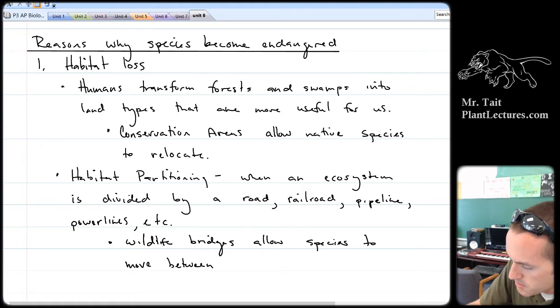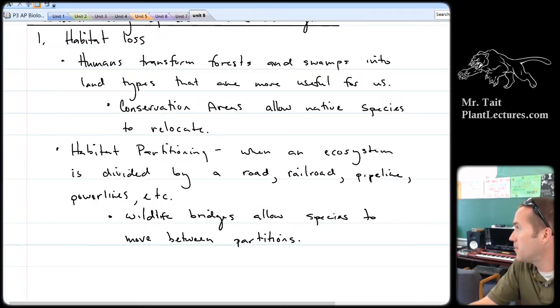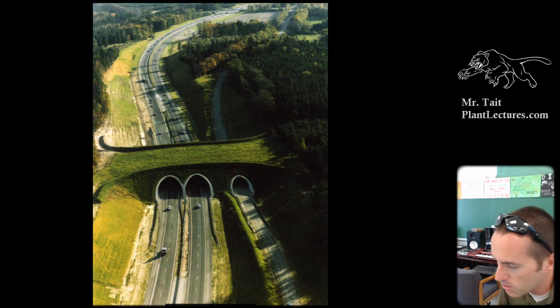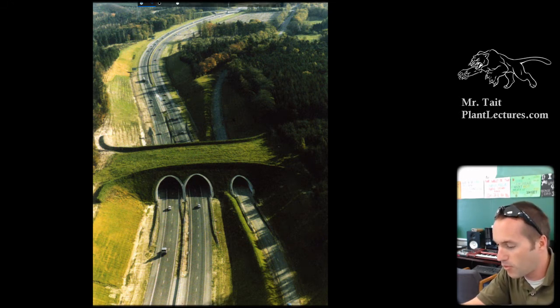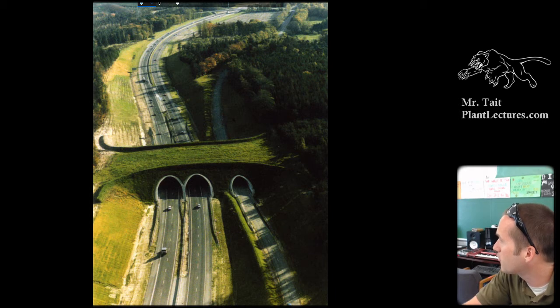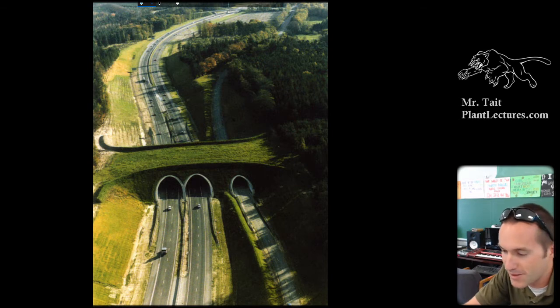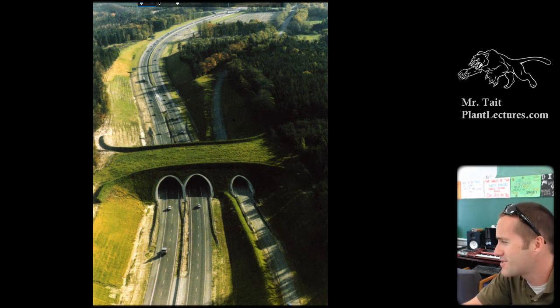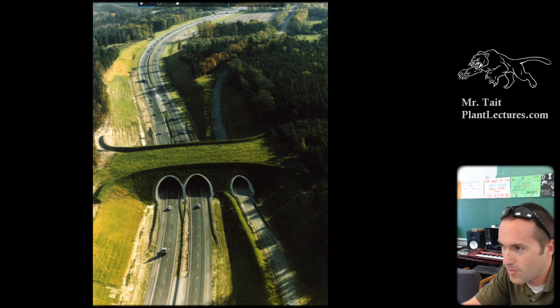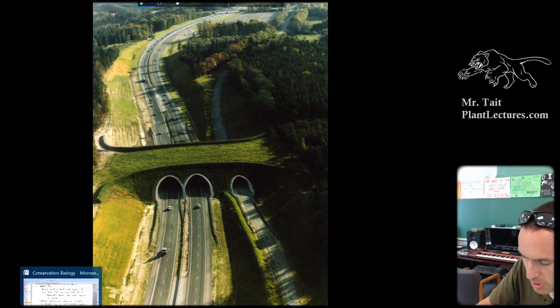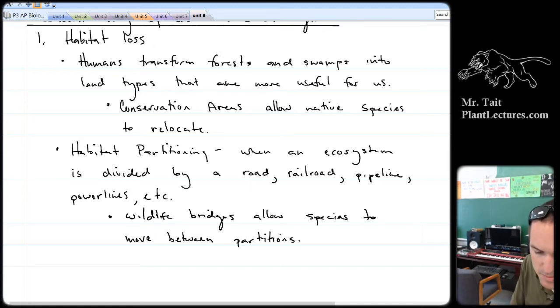Wildlife bridges allow species to move between the partitions, but this is not a perfect solution. An organism has to leave the forest and go across this narrow passageway with all these cars traveling under it. It's not exactly a comfortable situation for most animals. They're not going to continually do it. Can they if they need to? Yes. But is it going to be ideal? No. That's what we're most concerned about with conservation biology—making sure we're lessening the impact in whatever way that we can.